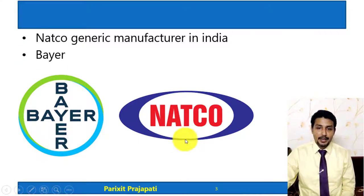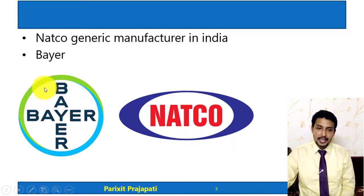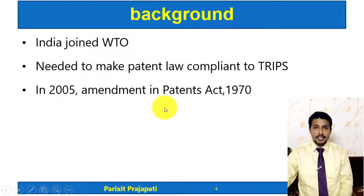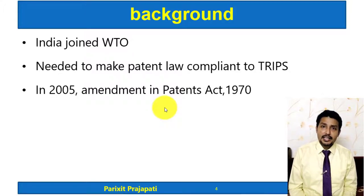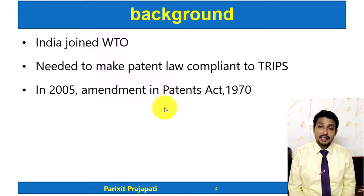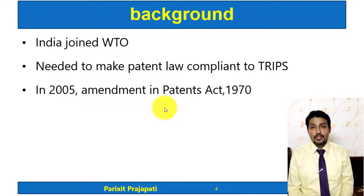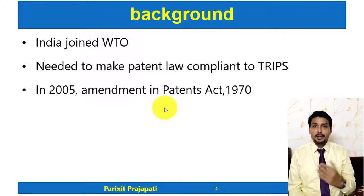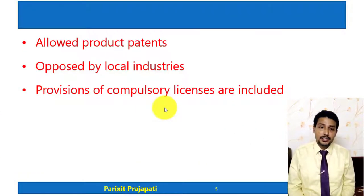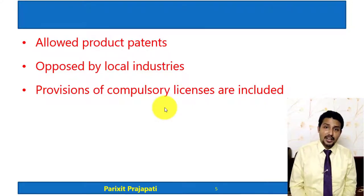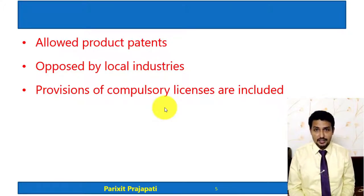This case was between Bayer Pharma and Natco. Natco is a generic manufacturer in India, while Bayer is a multinational pharmaceutical company. For background: India joined the WTO (World Trade Organization), and after that there was a need to change the patent law to be compliant with TRIPS — the Trade Related Aspects of Intellectual Property Rights agreement. So in 2005, the Patents Act was amended, and after that amendment India began allowing product patents.